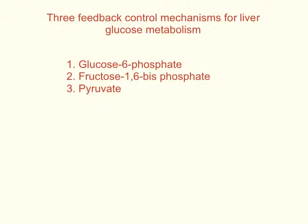We want to look at the three feedback mechanisms in the liver that control glucose metabolism. Those three are the three irreversible reactions that take place. Whenever you go from glucose to glucose 6-phosphate, the glucokinase reaction is irreversible — glucokinase doesn't go in reverse under physiological conditions. You have to use glucose 6-phosphatase to go back to glucose. Fructose 1,6-bisphosphate involves another irreversible reaction, as does the reaction from phosphoenolpyruvate to pyruvate. These are the three breakpoints where you can control metabolism in the liver.